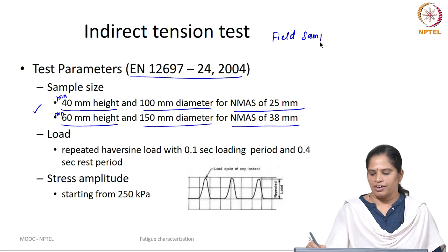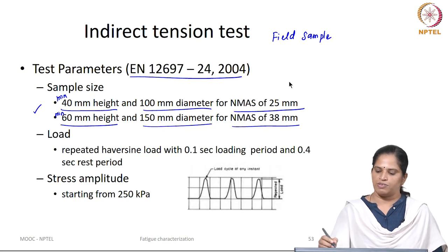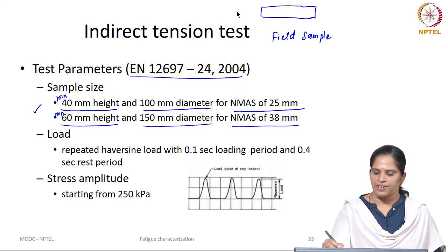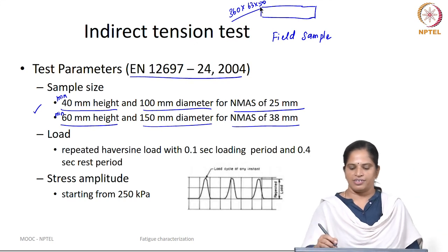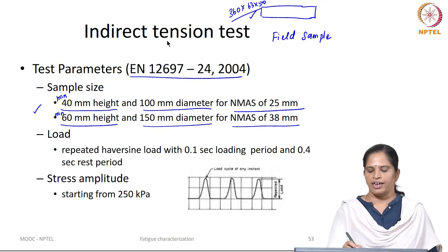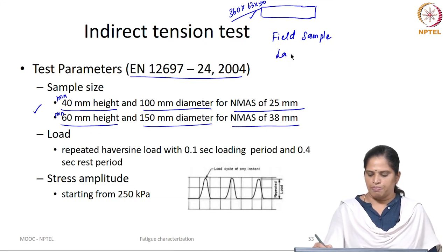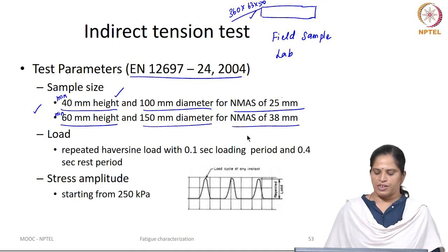This is a main advantage of IDT. For a 4-point beam bending test, we use a flexural beam of size 360 by 63 by 50 mm. Coring this slender beam from a field is difficult. So if you want to test a core sample, you can use this indirect tension test — it can be a field sample or a lab-prepared sample. The dimension of the sample has to be specific, defined based on the nominal maximum size aggregate used.